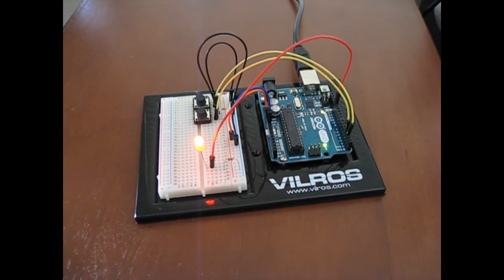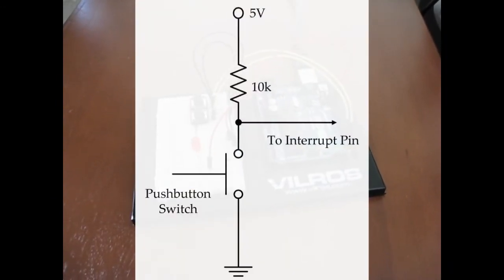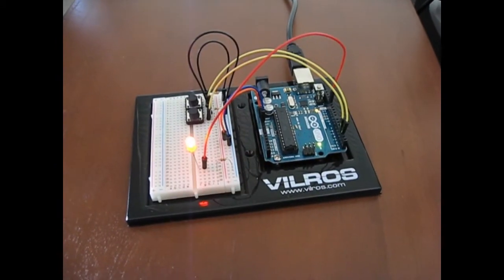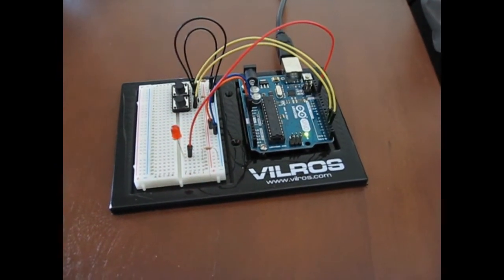They're both pulled up to 5 volts with a resistor. And when I push the switch, it pulls that pin to ground. So there are two interrupt pins on the Arduino.